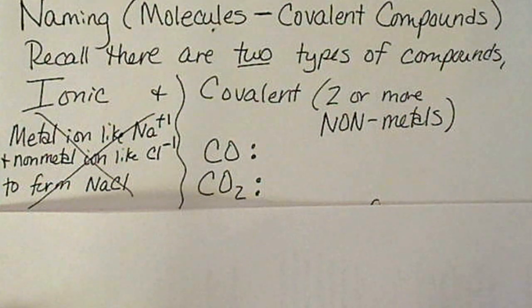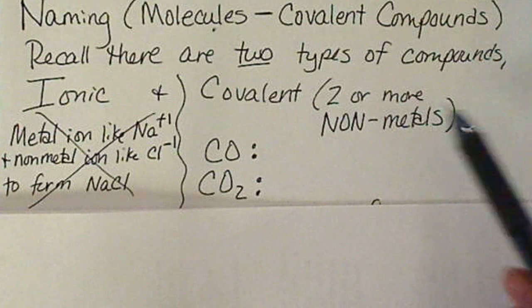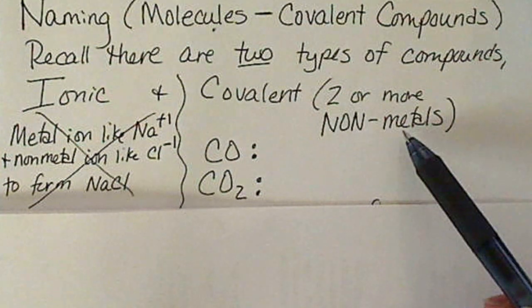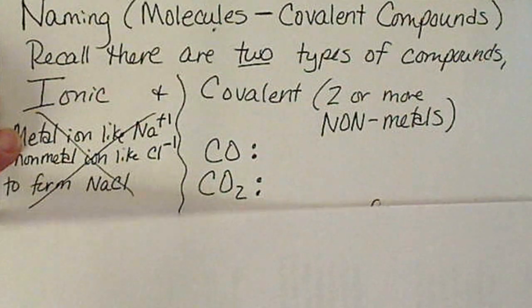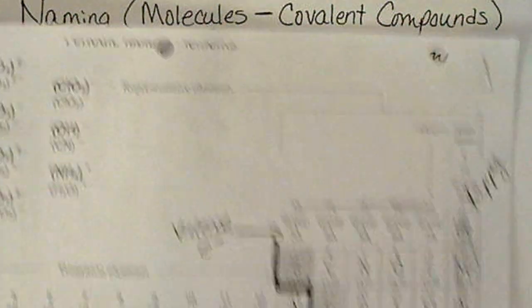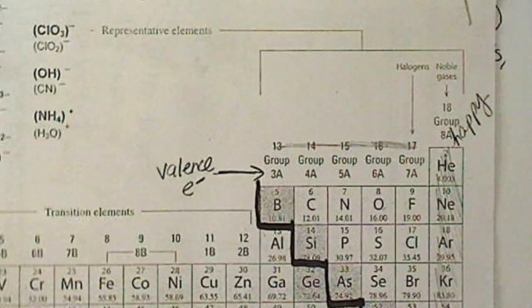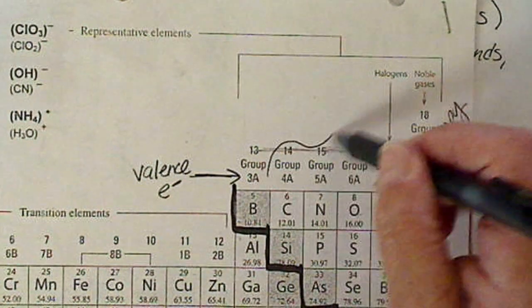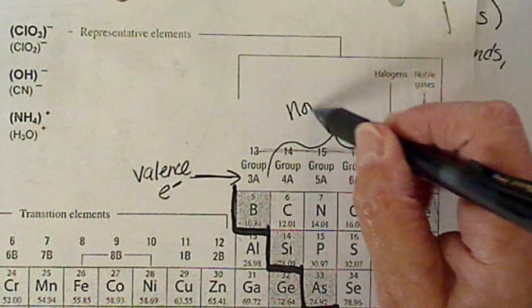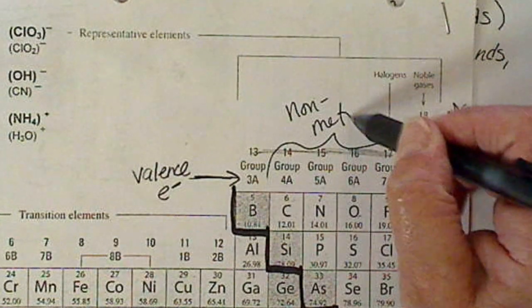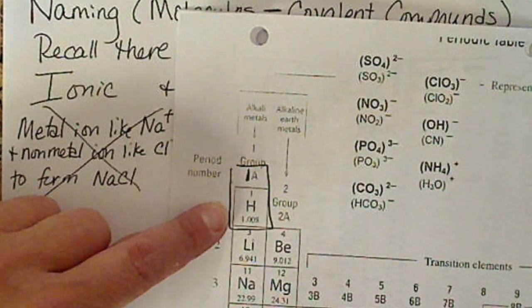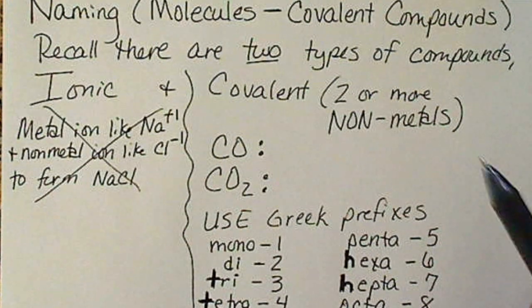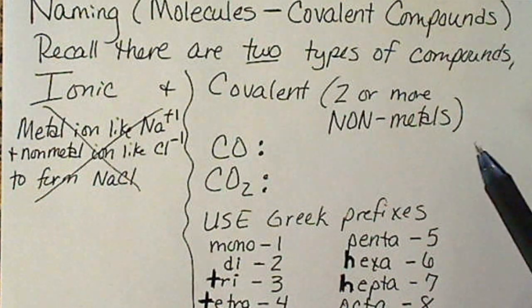We're going to be naming covalent compounds, which consist of two or more nonmetals like CO or CO2. We can tell when we have a nonmetal compound because the nonmetals are always to the right of the stair steps, and hydrogen is also a nonmetal. So these are the types of compounds that we've been drawing dot structures for.